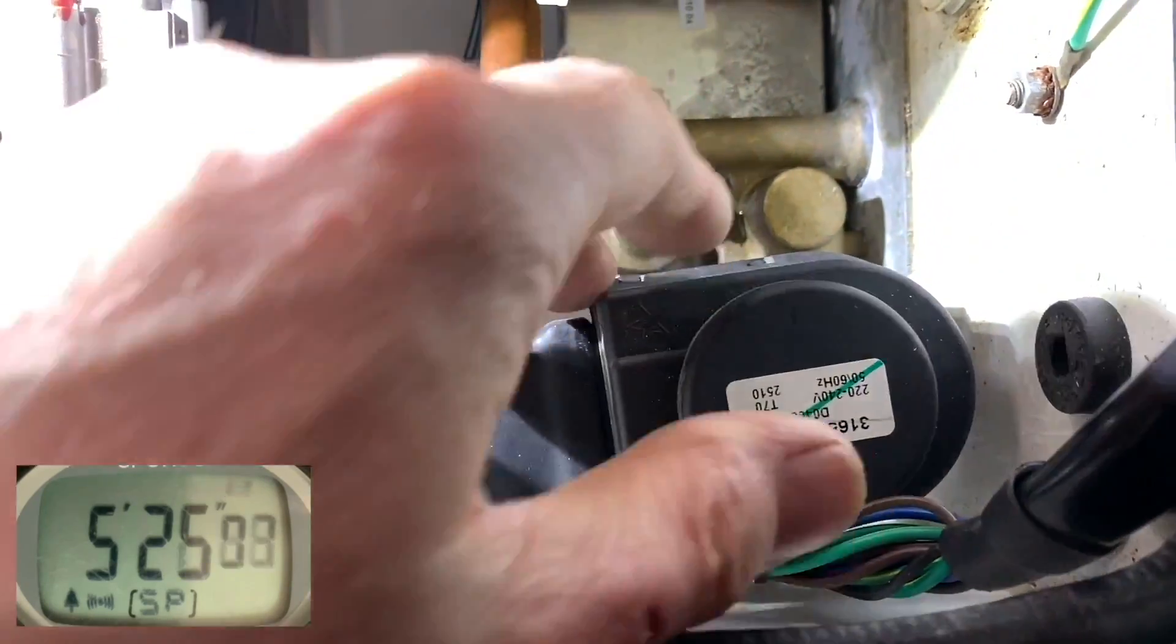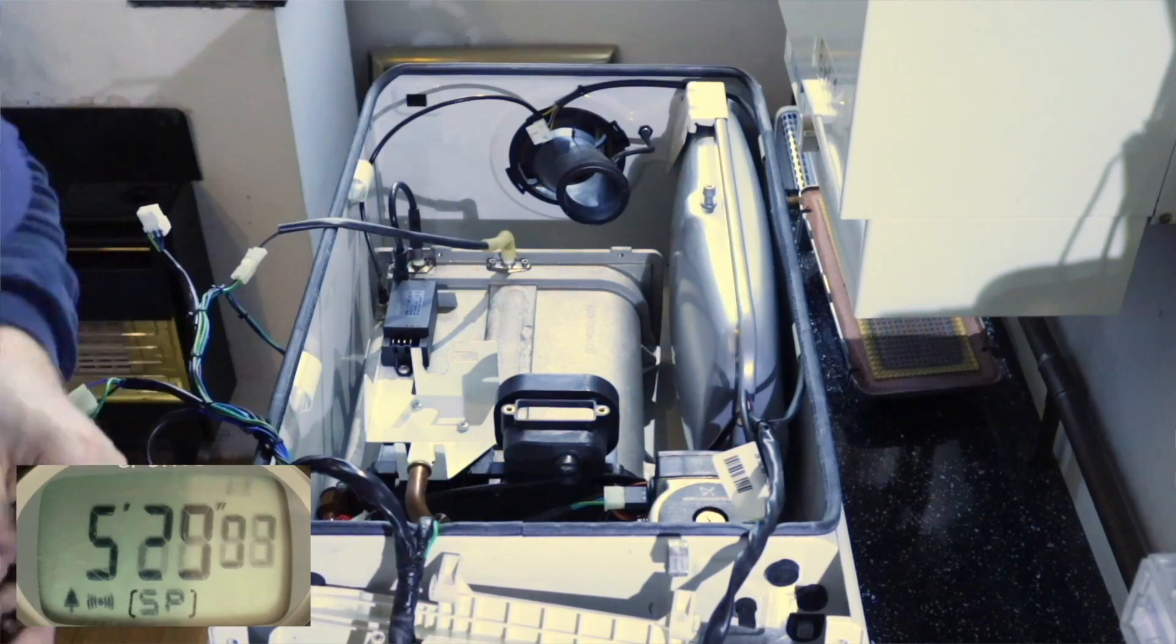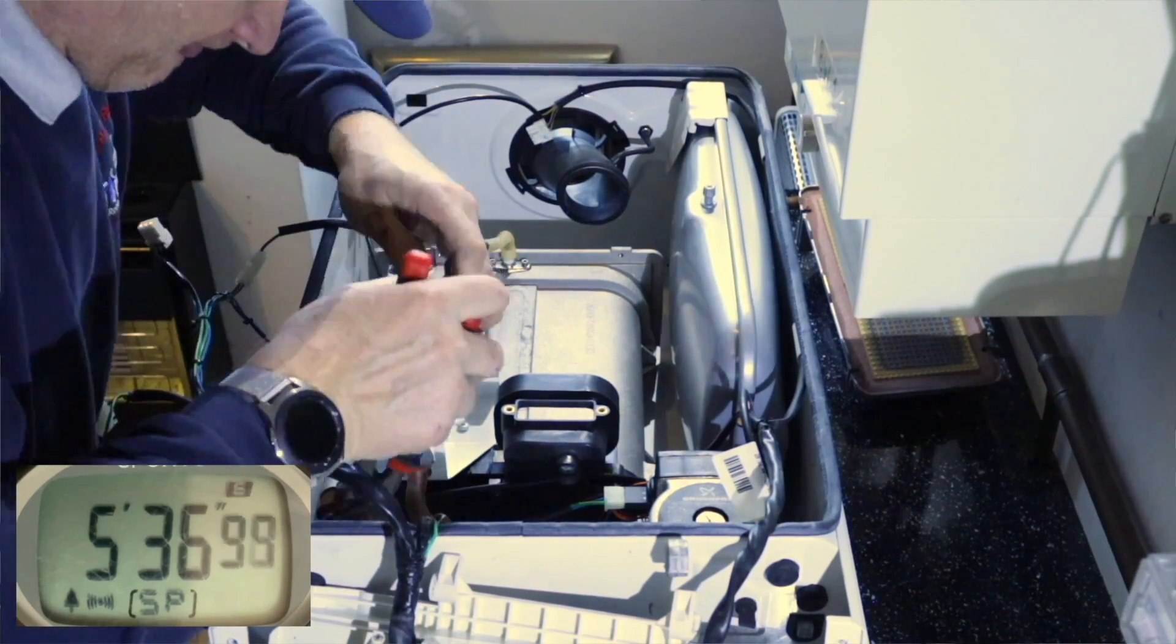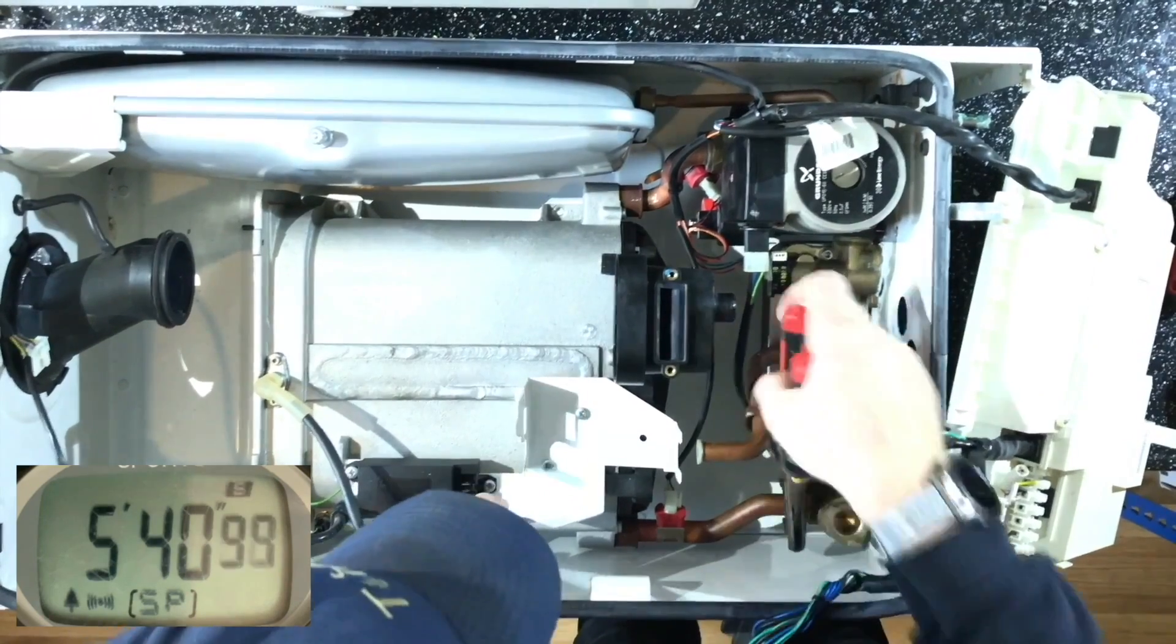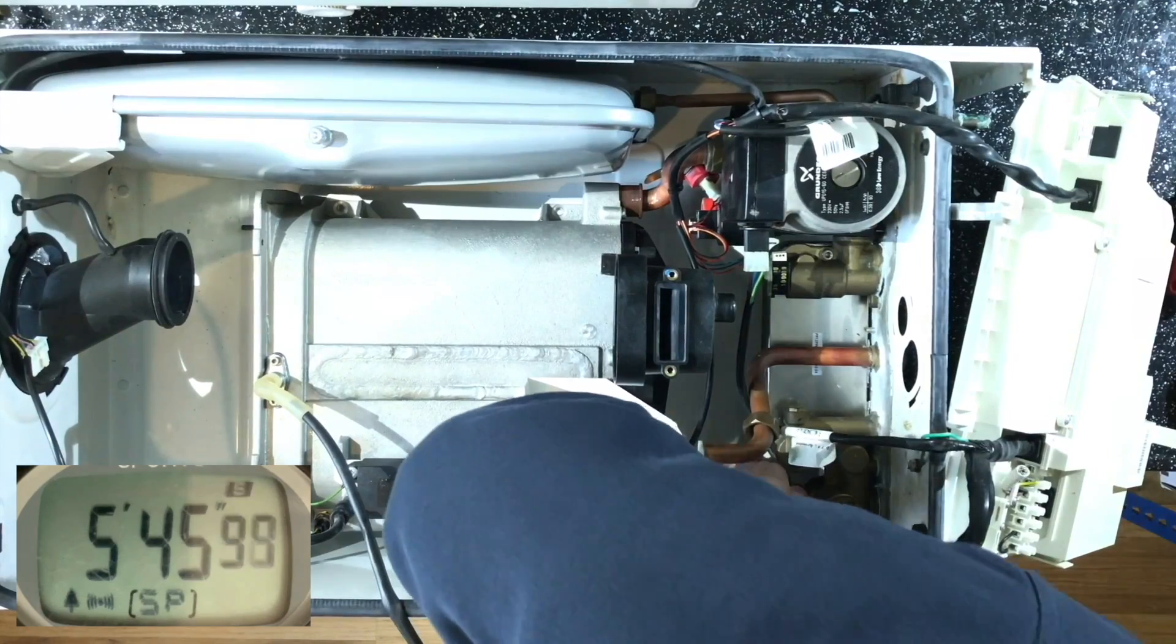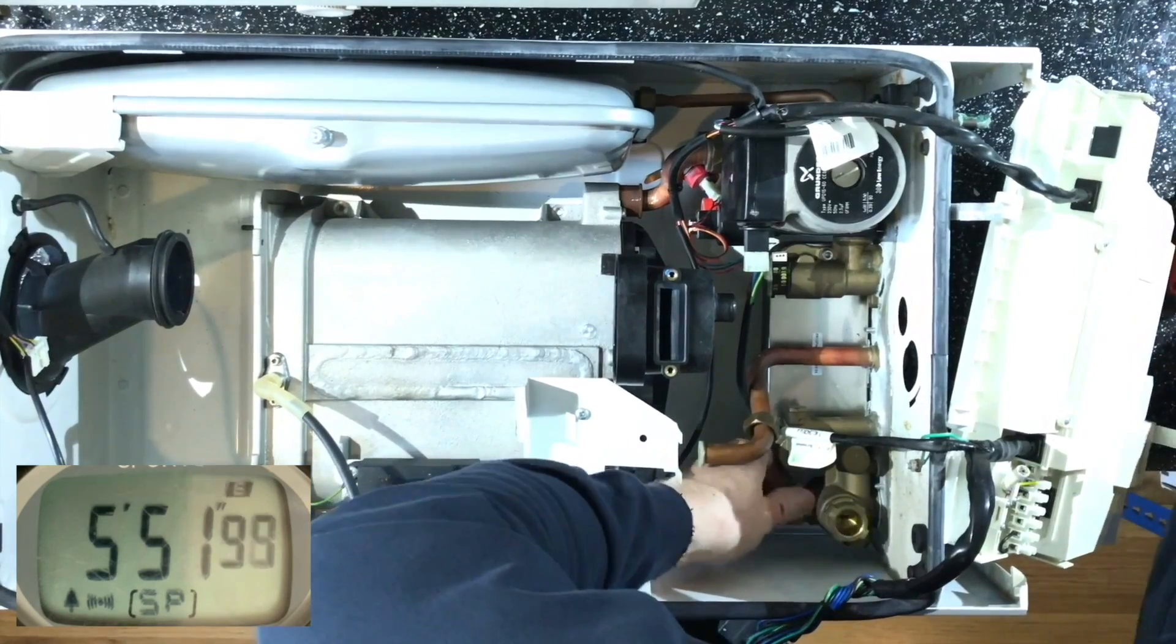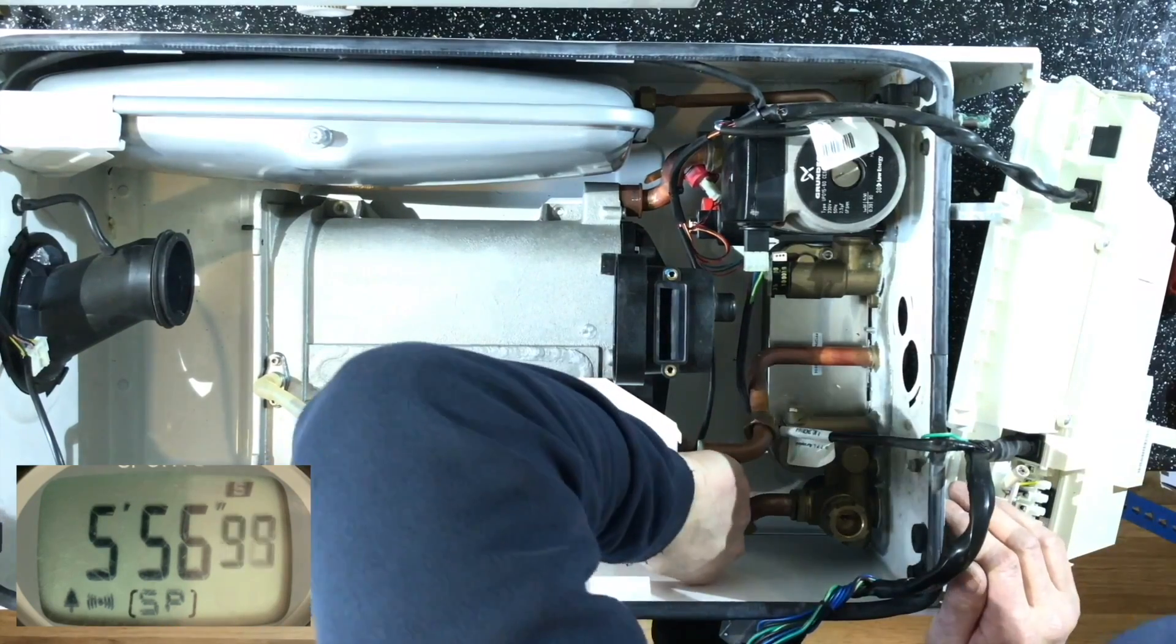So I've just removed the retaining clip now for the diverter valve head. So the diverter valve is for heating and hot water. When the pin inside this diverter valve is out, it's in central heating mode, and when the pin is in, it's in hot water mode. So basically, in this cartridge, which this is attached to, it's a spring-loaded cartridge. The motor drives it in or lets it come back out to either go into hot water or central heating mode.